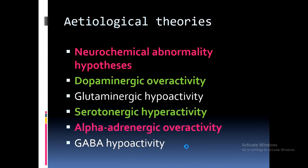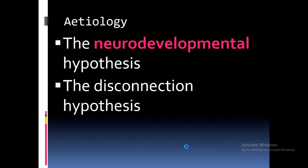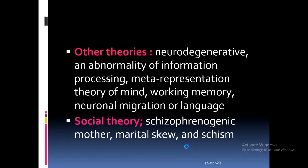Regarding etiological theories, several neurochemical abnormality hypotheses are proposed: dopamine hyperactivity, glutamatergic hypoactivity, serotonergic hyperactivity, alpha-adrenergic hyperactivity, and GABA hypoactivity are the major neurochemical theories considered. The neurodevelopmental hypothesis and disconnection hypothesis of neurons are also recognized. Other theories include the neurodegenerative theory, abnormality of information processing, meta-representation theory of mind, working memory deficits, and neuronal migration or language abnormalities.